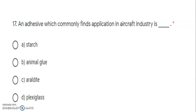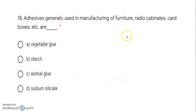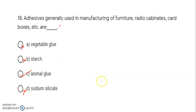Next: adhesive commonly found in application in aircraft industry. The answer is araldite, also called epoxy resin, which is used in the aircraft and automobile industry. Next: adhesive generally used in manufacturing of furniture, radio cabinets, and cardboard boxes needs strong bonding. Vegetable glue, starch, and sodium silicate are not used for this. The correct adhesive is animal glue.